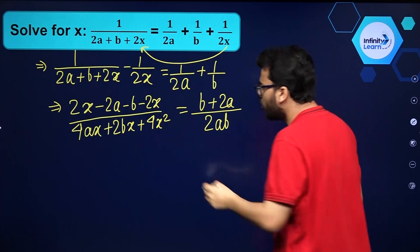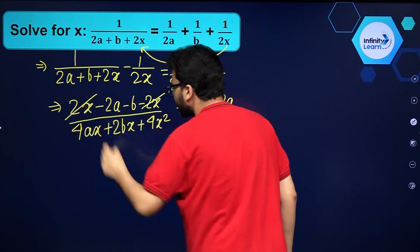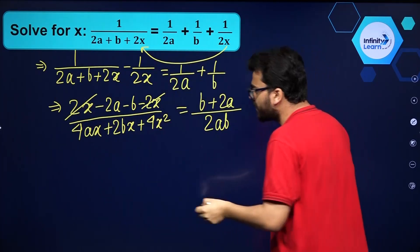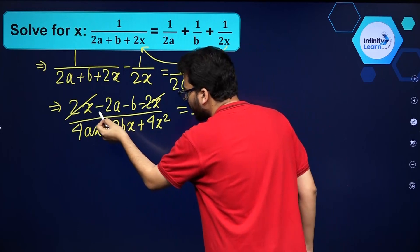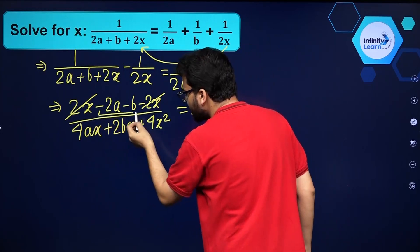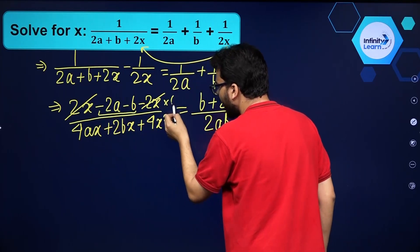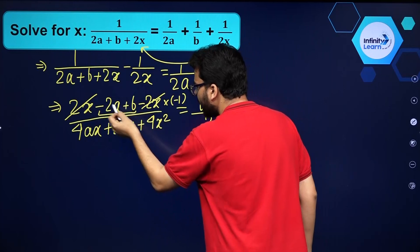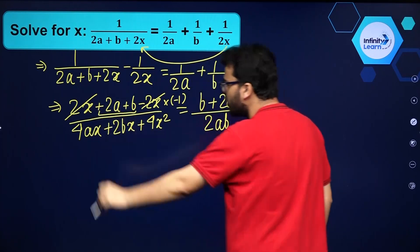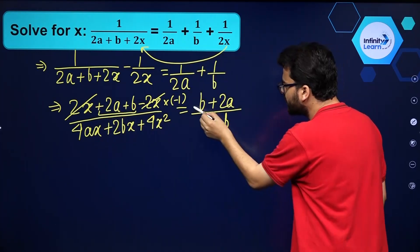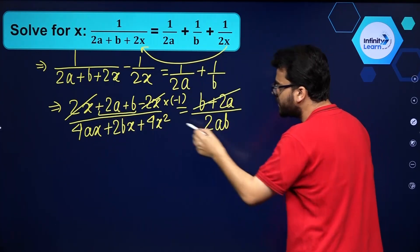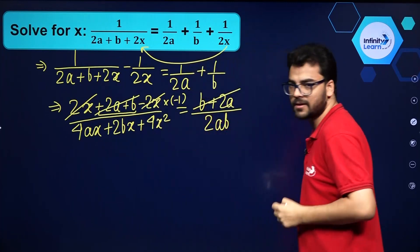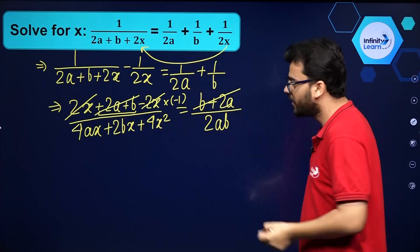You see over here we can cancel out these terms. In this step, can I not take minus 1 as common? If I take minus 1 as common I'll get 2a plus b over here. So you see 2a plus b and 2a plus b will be cancelled out.